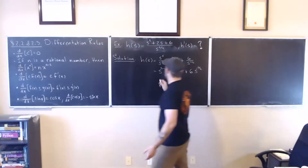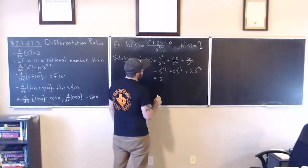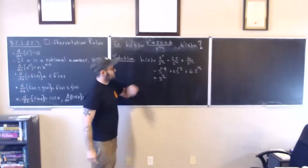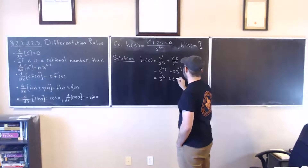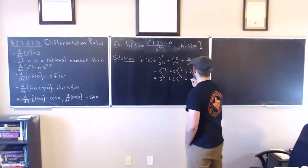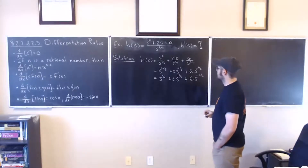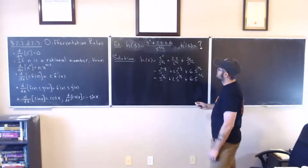Let me simplify this down. Five minus one half is nine halves. So we have s to the nine halves, plus 2 times s to the one half, plus 6 times s to the negative one half. And I can combine terms — the 2s^(1/2) and... actually let me make sure. One minus one half — wait, those aren't like terms. So we have s^(9/2) plus 2s^(1/2) plus 6s^(−1/2).